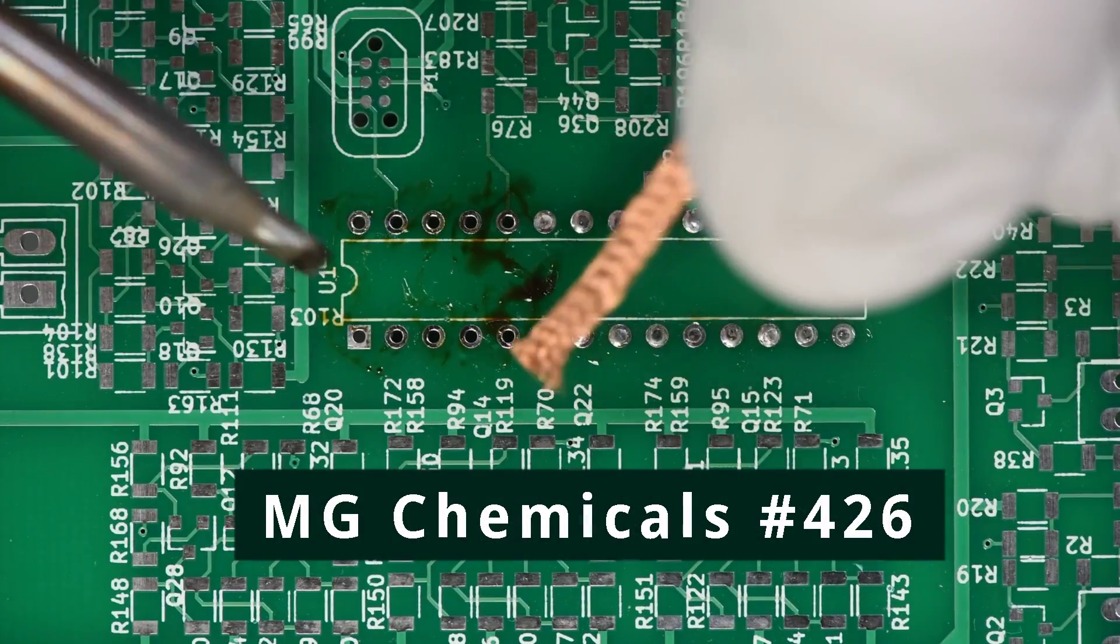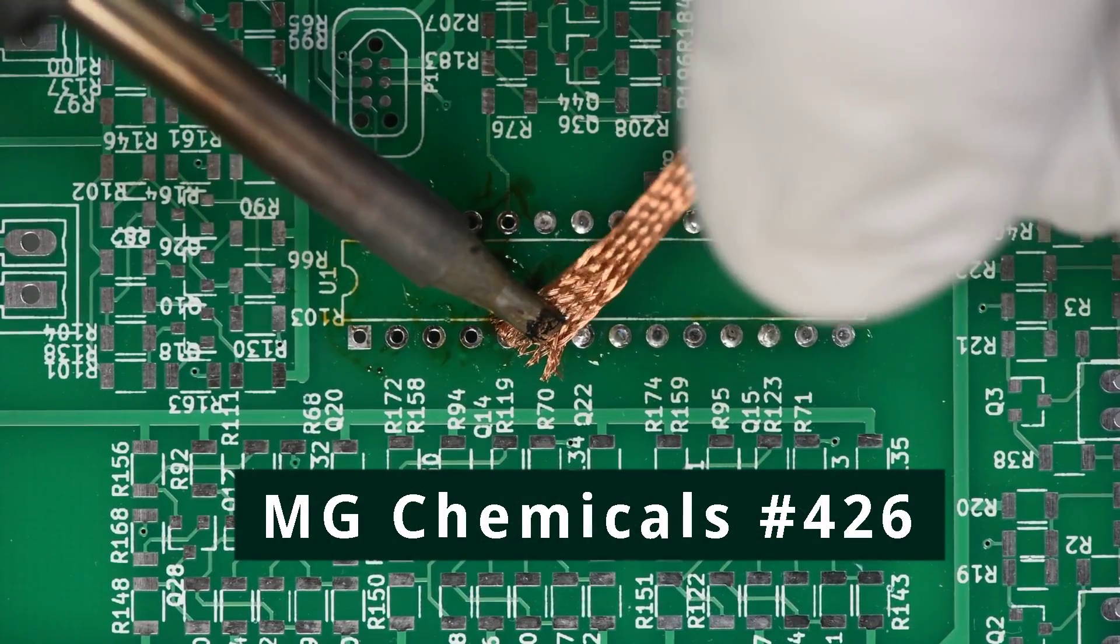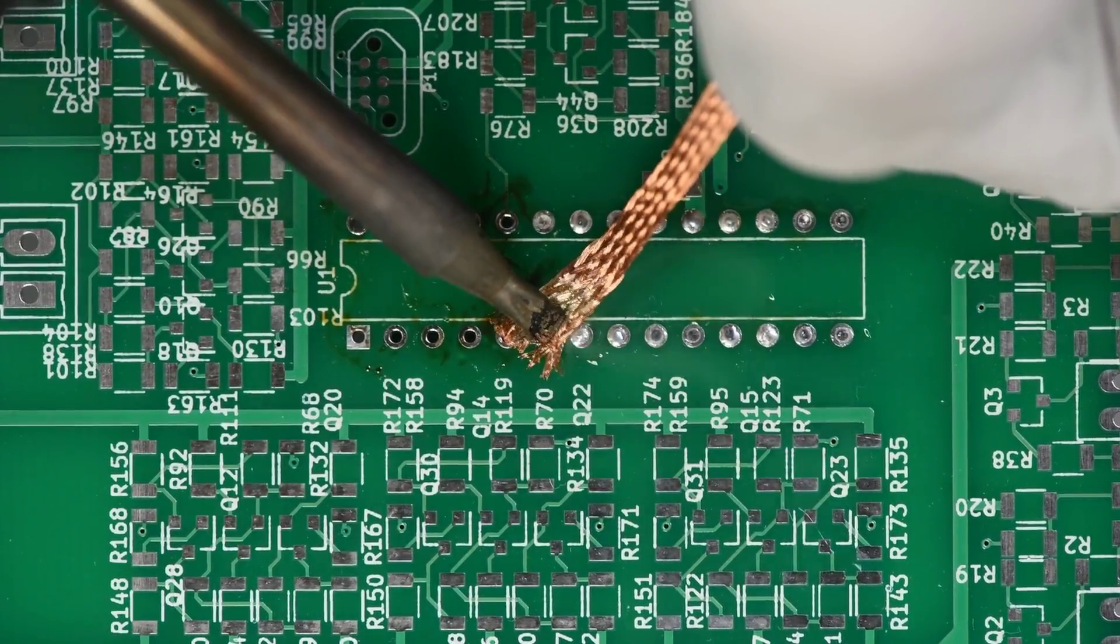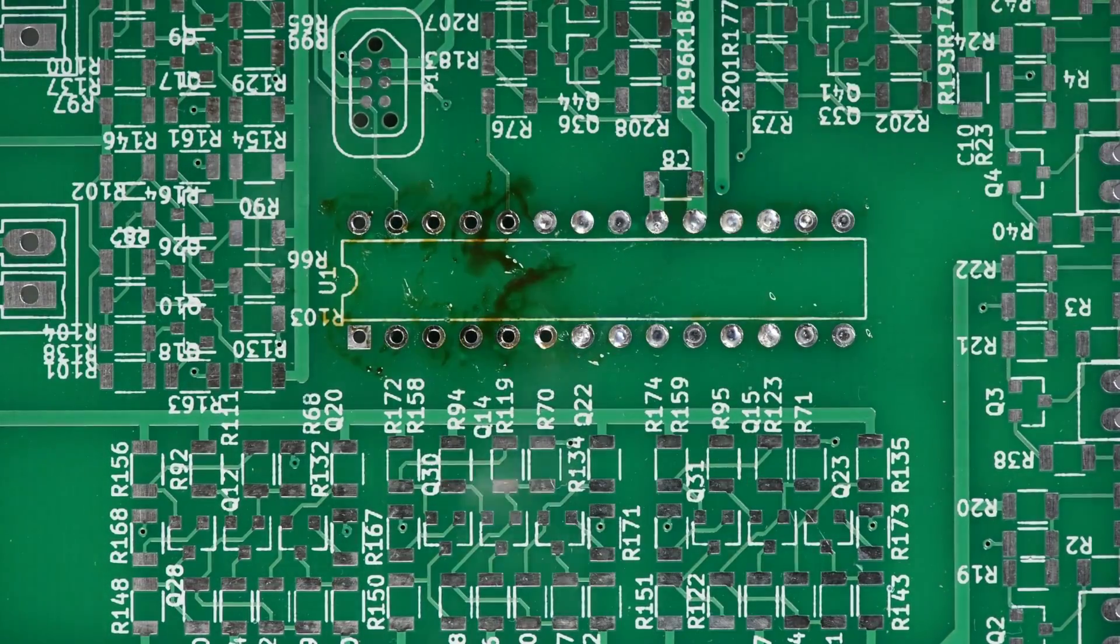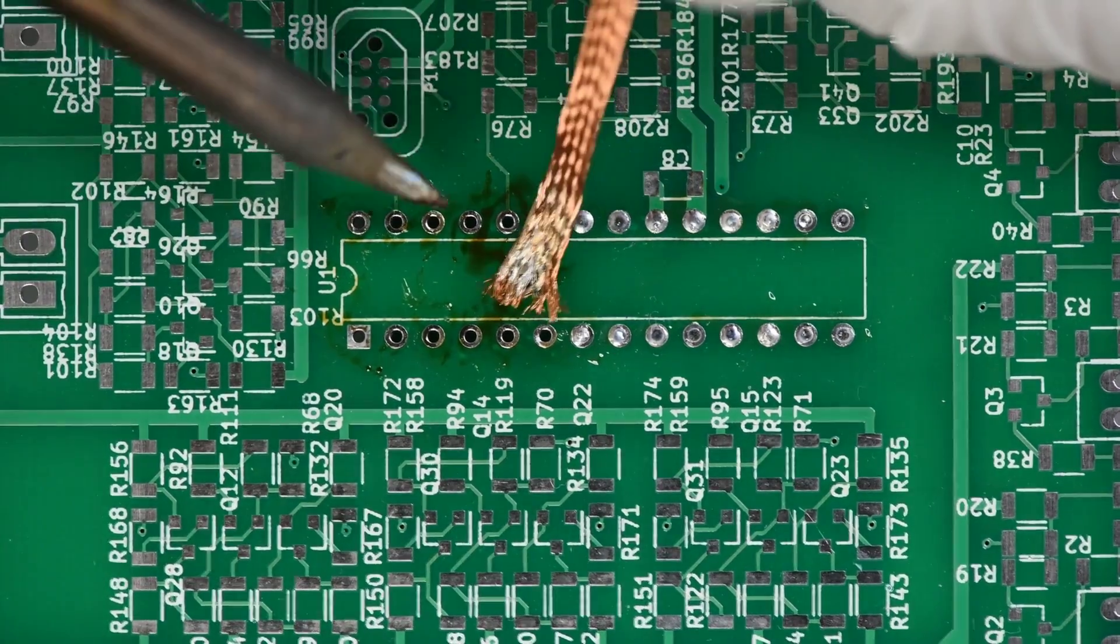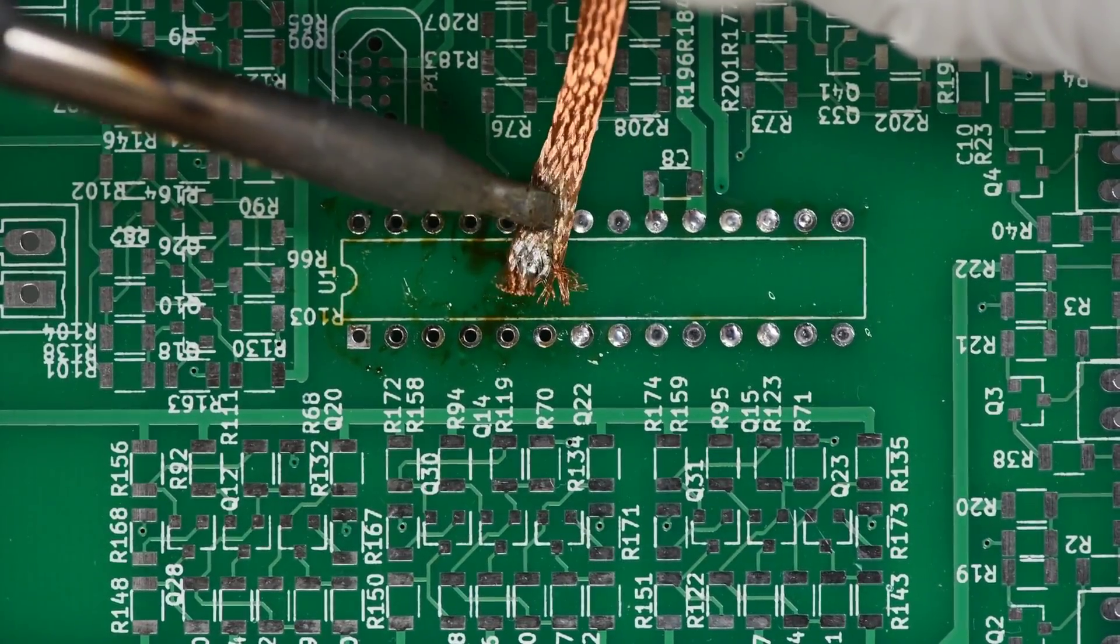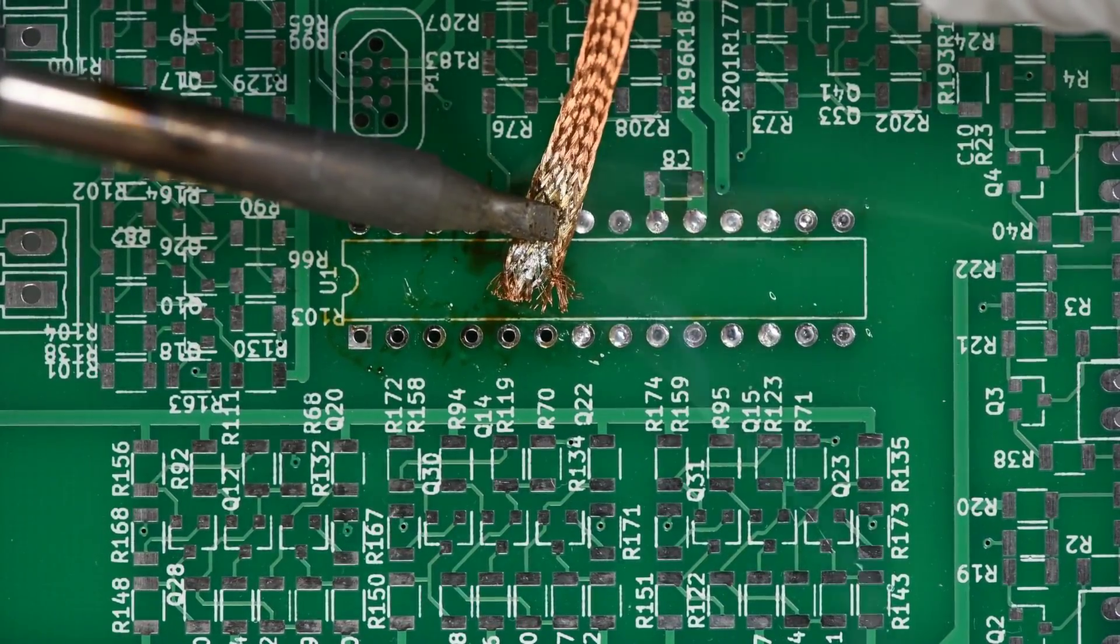And last is the MG Chemicals Super Wick. I think it might be the softest of the bunch. It doesn't hold its form as well as the GUT wick, while being about the same softness. But solder flows through the braid very nicely, even at this low temperature.